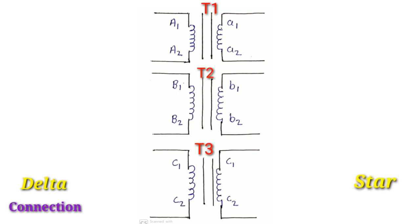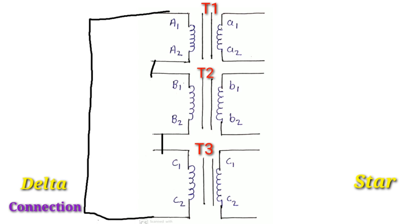Transformer T1 primary winding has two terminals a1 and a2. Terminal a2 is connected to transformer T2's terminal b1. Transformer T2's second terminal b2 is connected to transformer T3's terminal c1. Finally, transformer T3's terminal c2 is connected back to transformer T1's terminal a1. With this connection, the primary side is connected in delta.